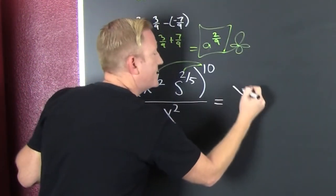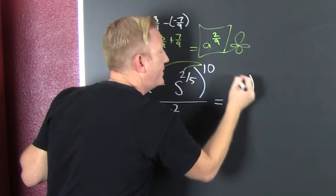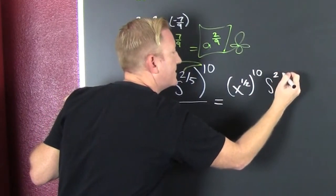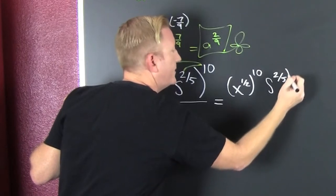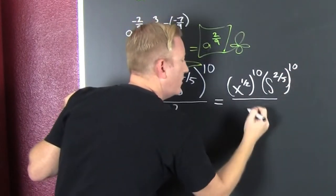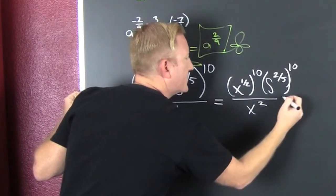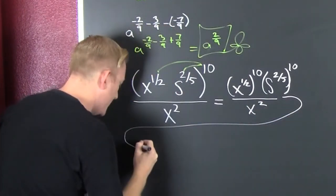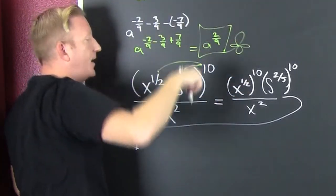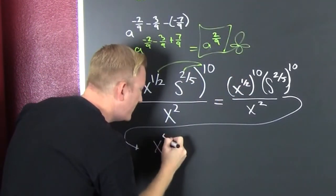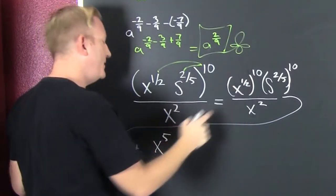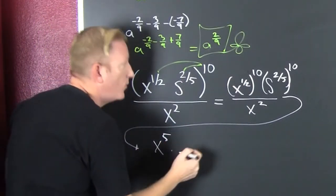I don't want to skip any steps. This is x to the 1 half to the 10, then s to the 2 fifths to the 10, and then that's all over x squared. I'm going to take it right down here. Power raised to a power you multiply. So that's x to the 5. Why? Because 1 half times 10. What's half of 10? It's 5 times.